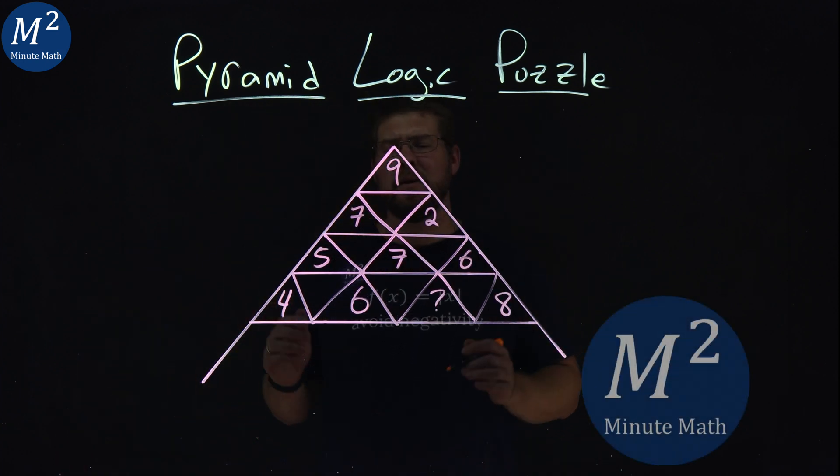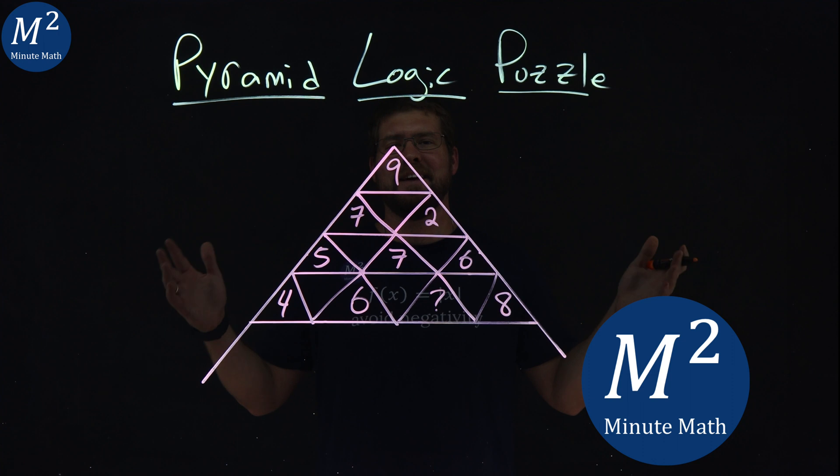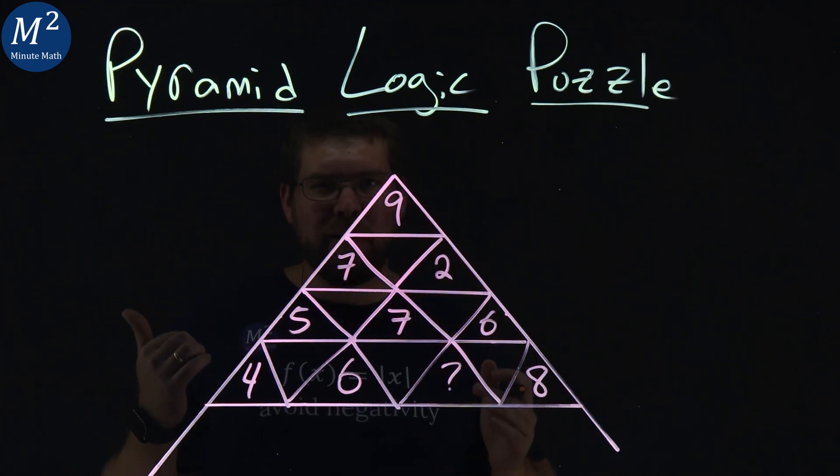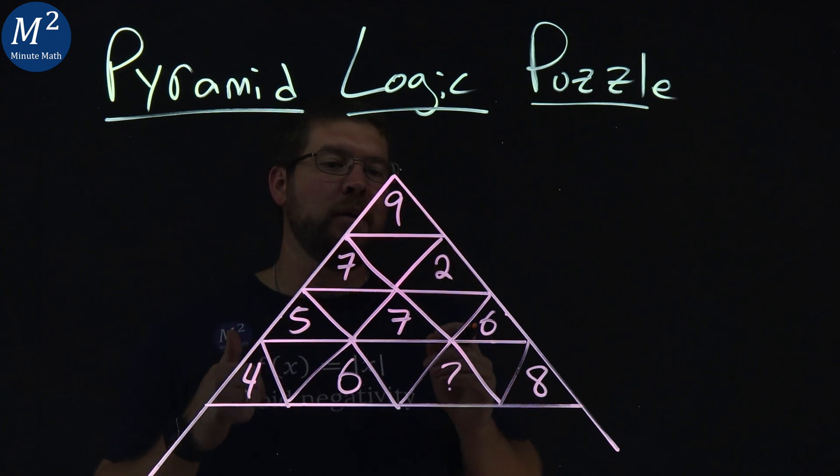Hi, I'm Sean Gannon and this is Minute Math, and we have the pyramid logic puzzle. The puzzle is this: we have this little pyramid here with little triangles all inside of it, and we have some numbers.